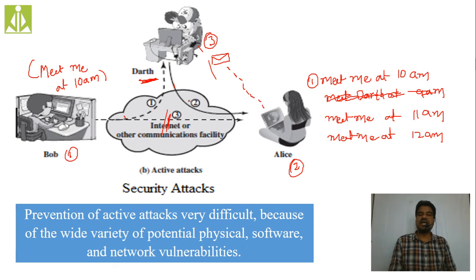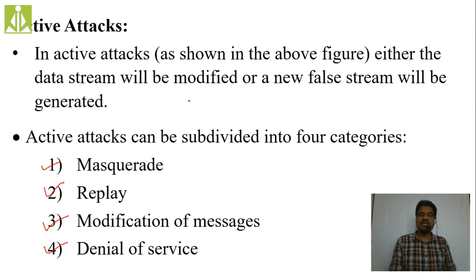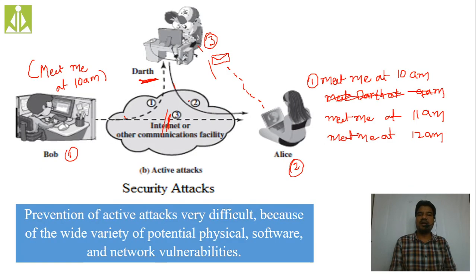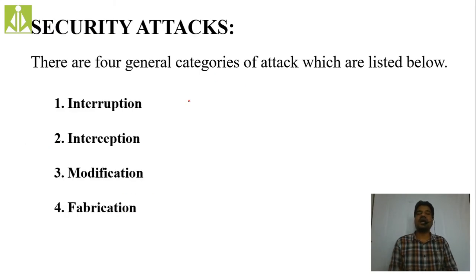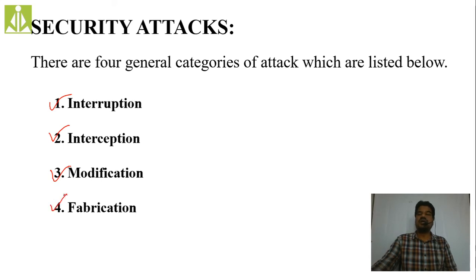So we discussed two types of cryptographic attacks: passive attacks — release of message content and traffic analysis — and active attacks — masquerade, replay, modification of message, and denial of service. These are important questions for external exams. The second type, security attacks, are also classified into four types: interruption, interception, modification, and fabrication.